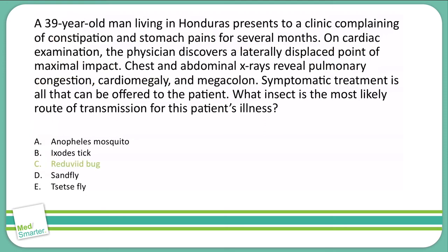C is the correct answer. The reduviid bug transmits Trypanosoma cruzi, which causes Chagas disease. Acute symptoms of Chagas disease can include chagomas — small skin granulomas caused by multiplication of the pathogen along the skin — as well as myocarditis and congestive heart failure. In severe or more chronic cases, we can see arrhythmias and dilated cardiomyopathy, which is where we get the lateral displacement of the point of maximal impact.